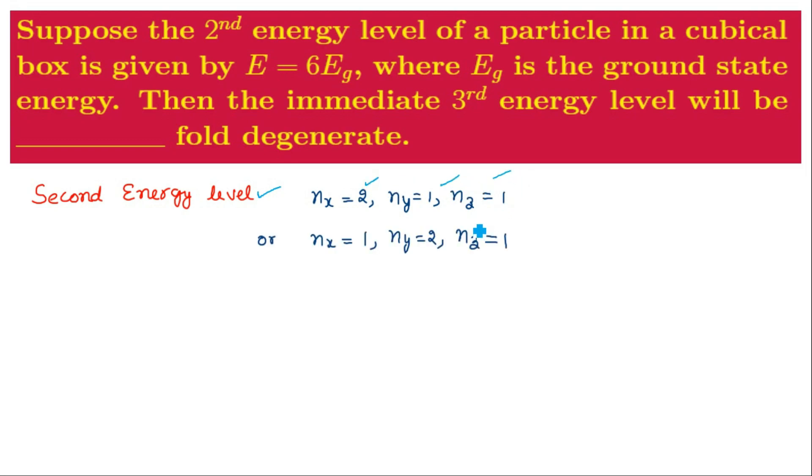NY and NZ are 1, and similarly NX can be 1, NY can be 2 and NZ will be 1, or the third possibility is that NX and NY both are 1 while NZ is 2. And all these three possible combinations of quantum numbers NX, NY, and NZ give us energy as shown here to be 6EG.